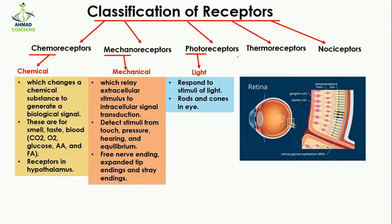Then come the photoreceptors. 'Photo' means light, so they respond to light. The rod and cone cells in the retina of the eye are the photoreceptors. Here you can see the retina consists of rod and cone cells. The cone cells are related to color vision, while the rod cells help you see in the dark.